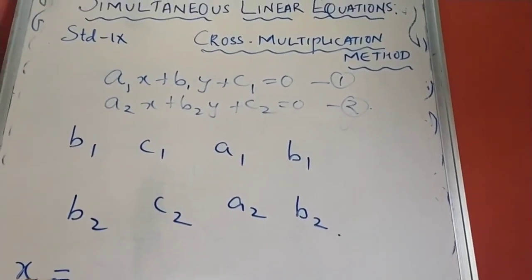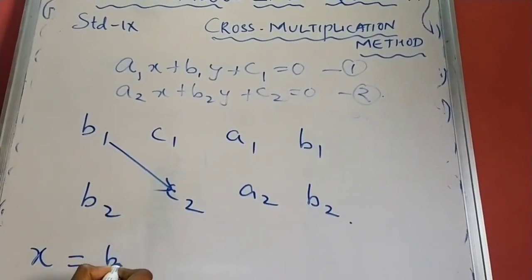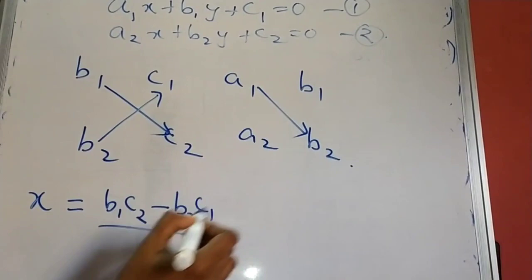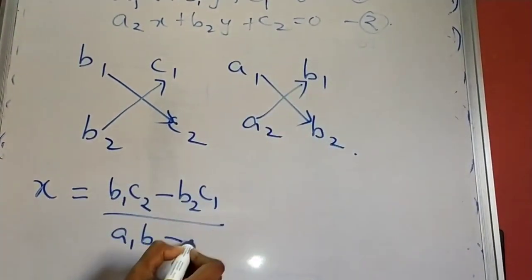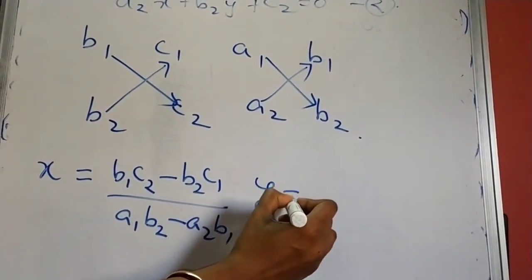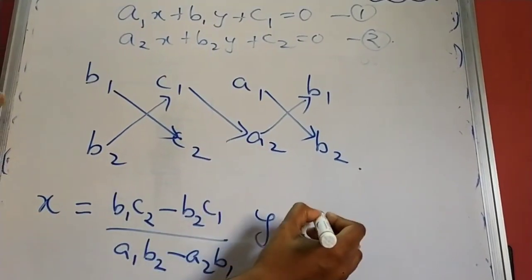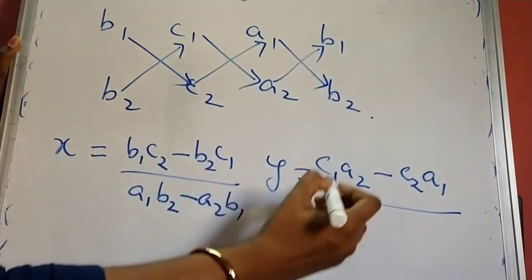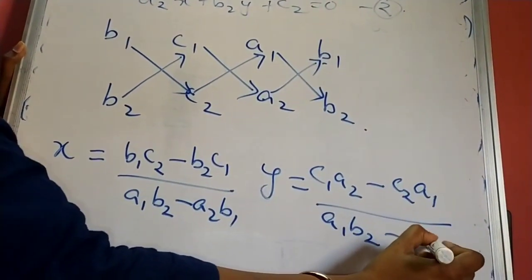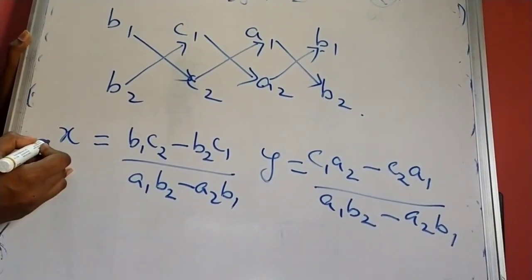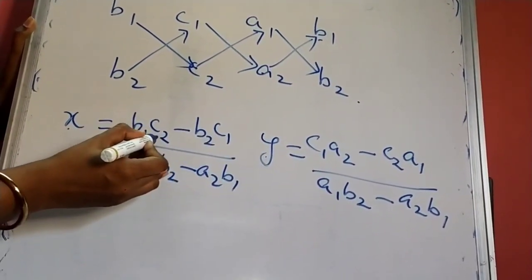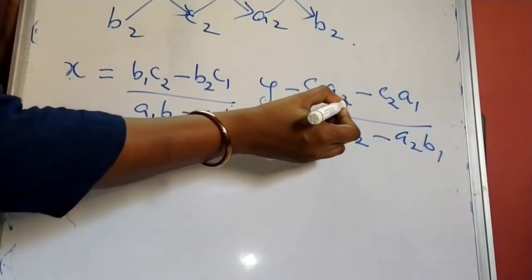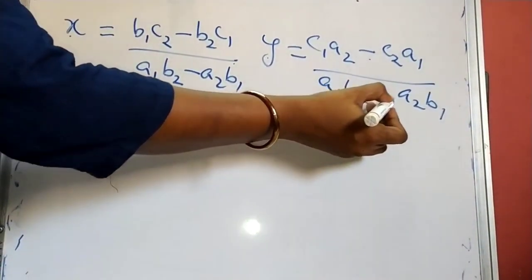If we need to find out the value of X, we multiply B1 with C2 minus B2 with C1, upon A1B2 minus A2B1. Similarly, the Y value we can get as C1 into A2 minus C2A1, upon A1B2 minus A2B1. So here we are finding that B1C2 minus B2C1 upon A1B2 minus A2B1, and for Y it is C1A2 minus C2A1 upon A1B2 minus A2B1.